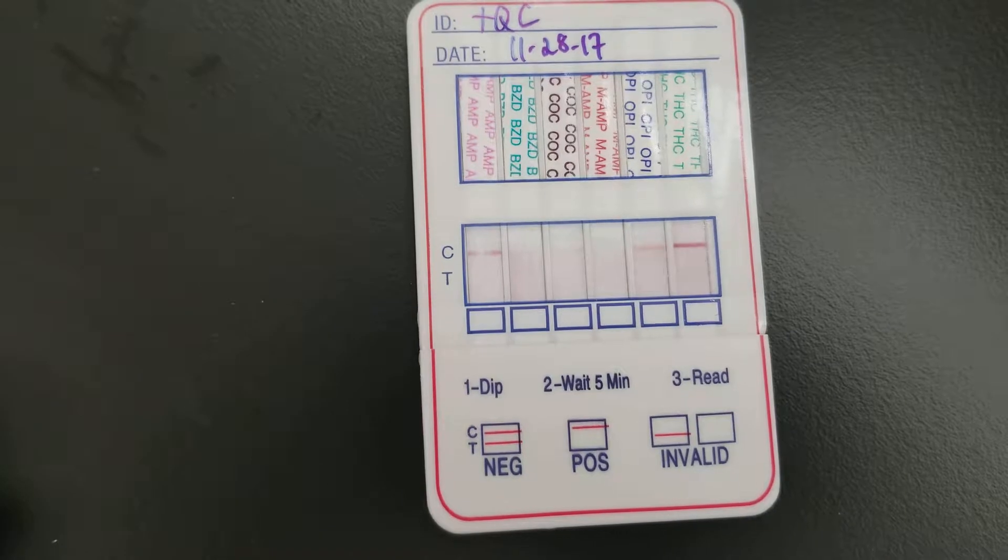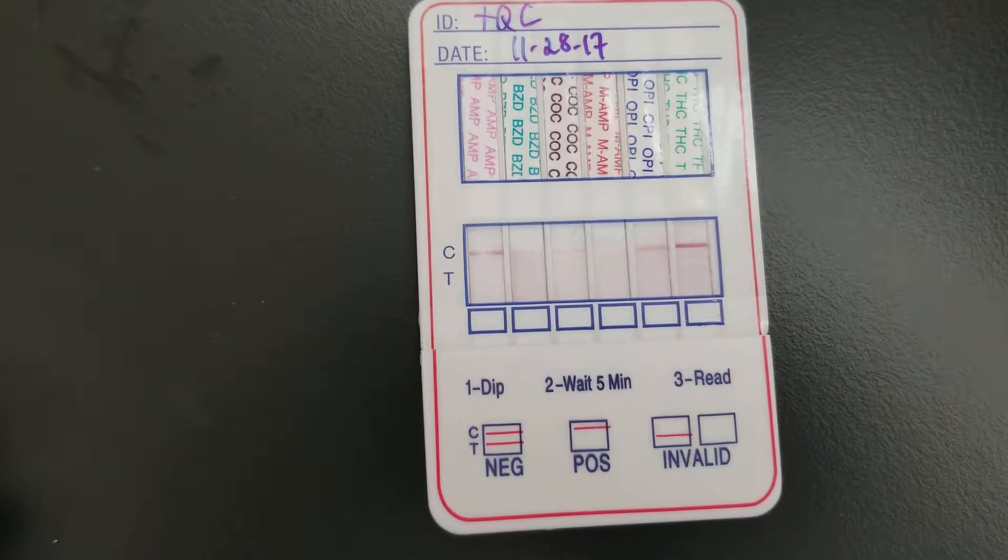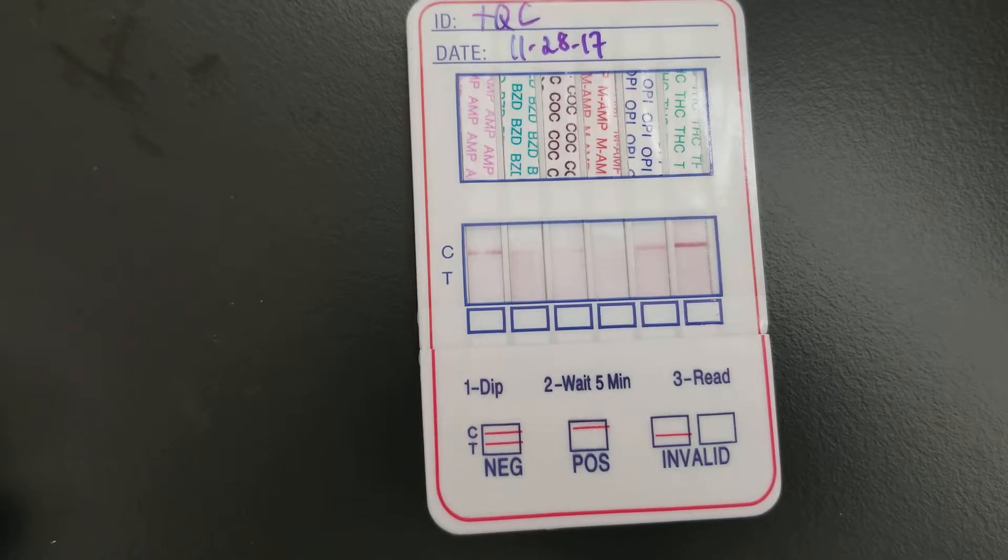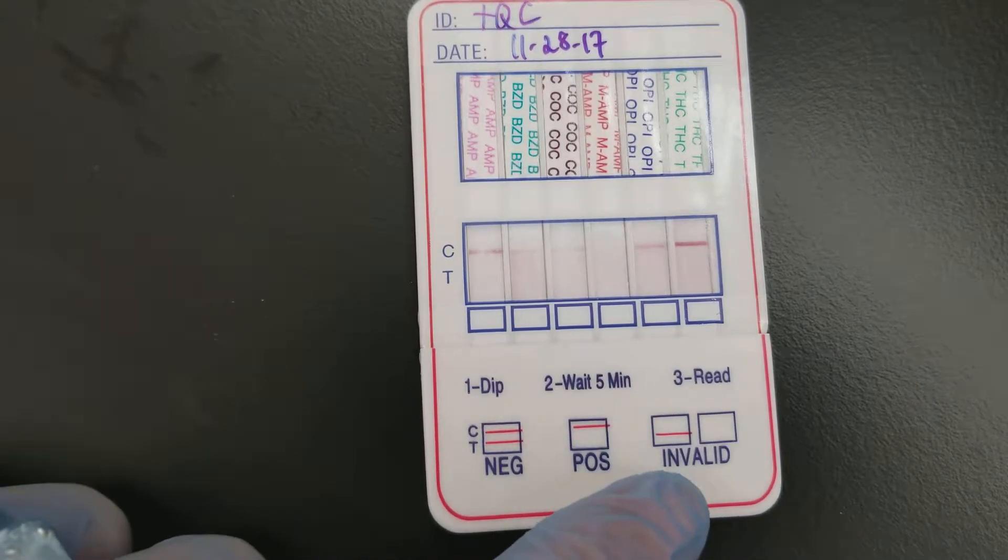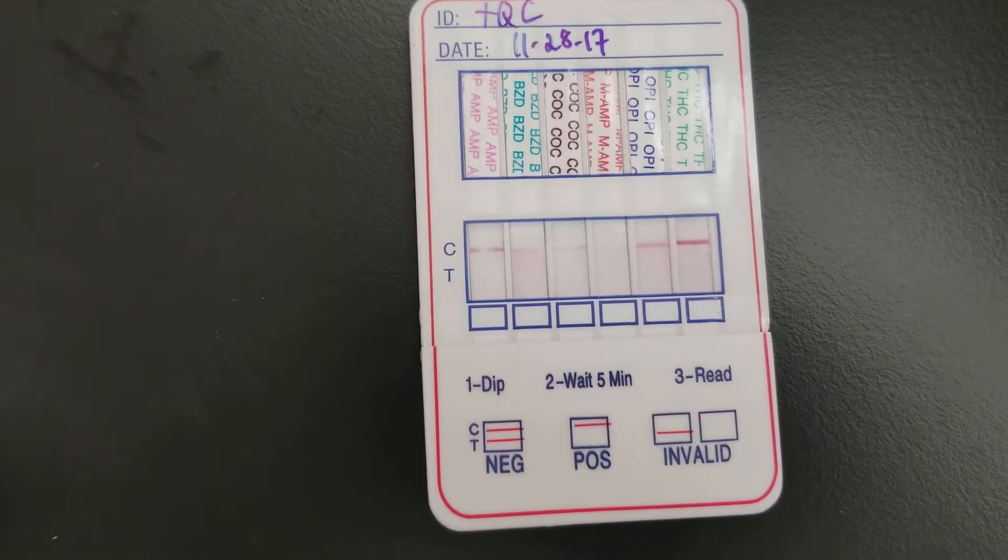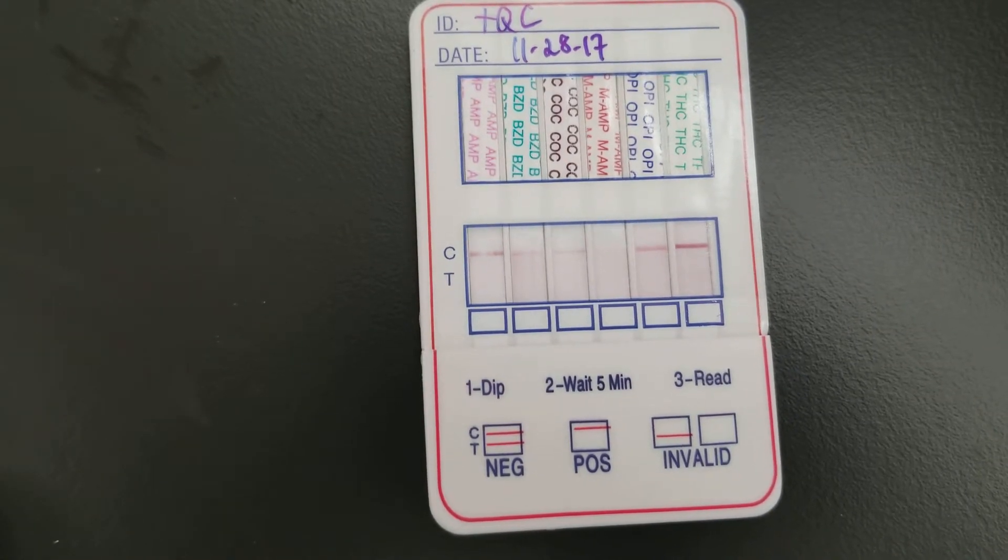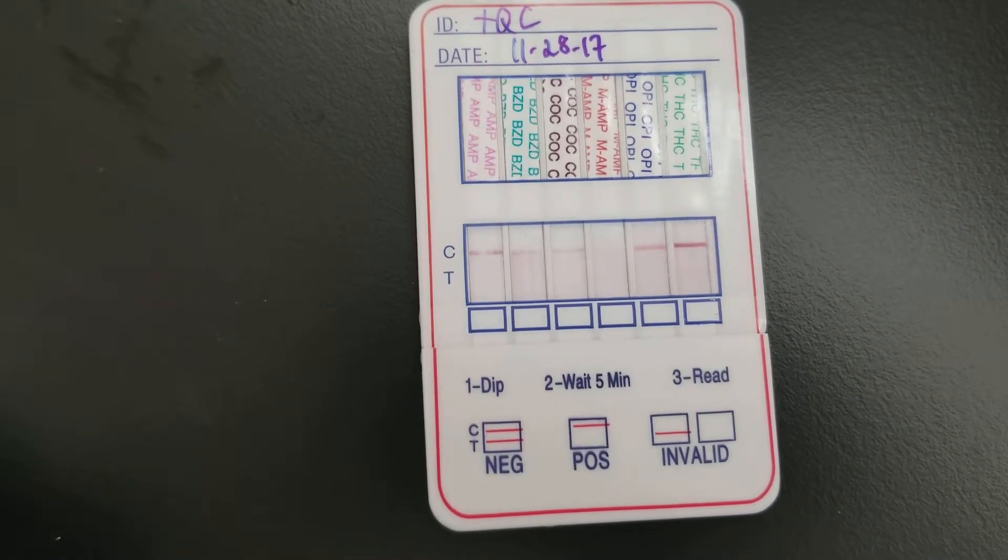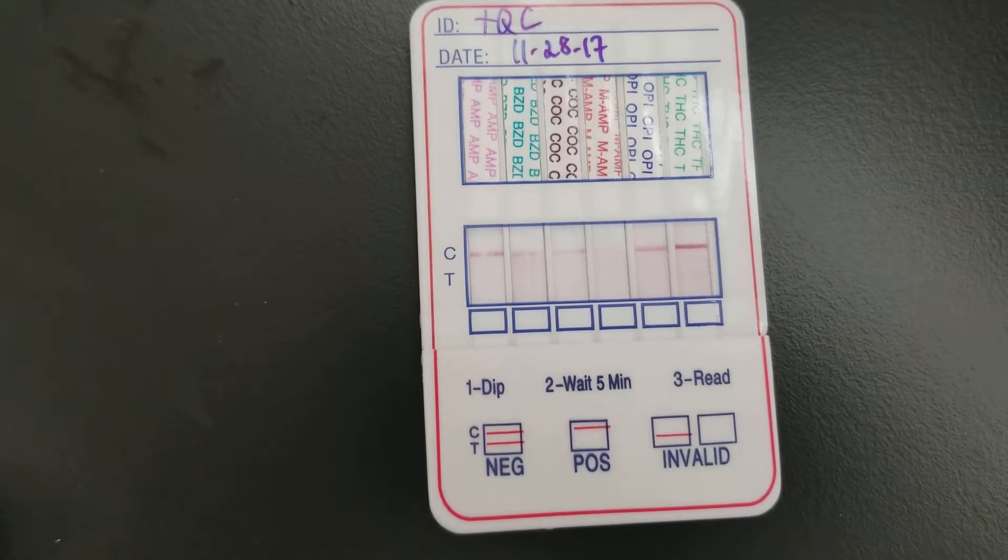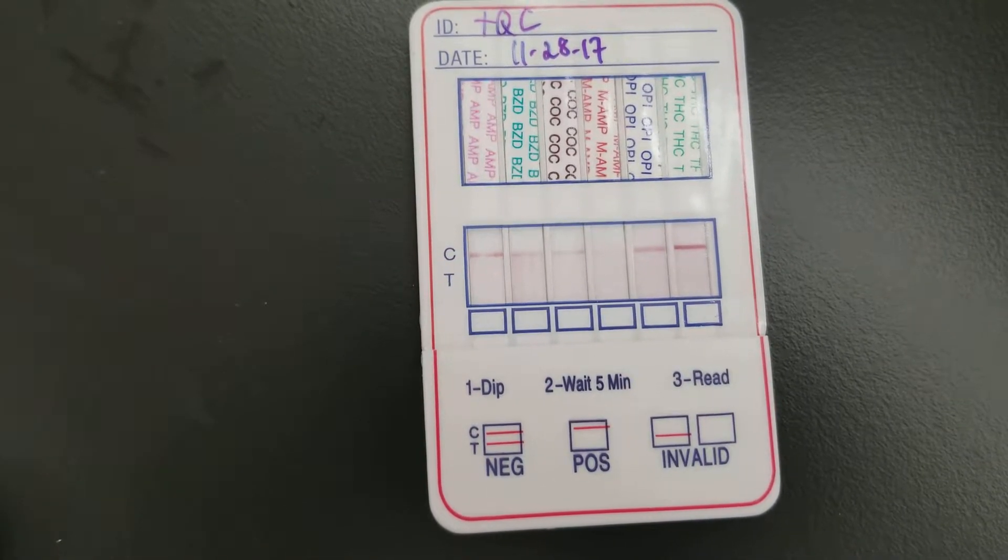If it's just the test line, that means it's invalid. You would then have to do it again from the same lot. And if that still doesn't work out as expected, you would go to a different lot and perform your QC.